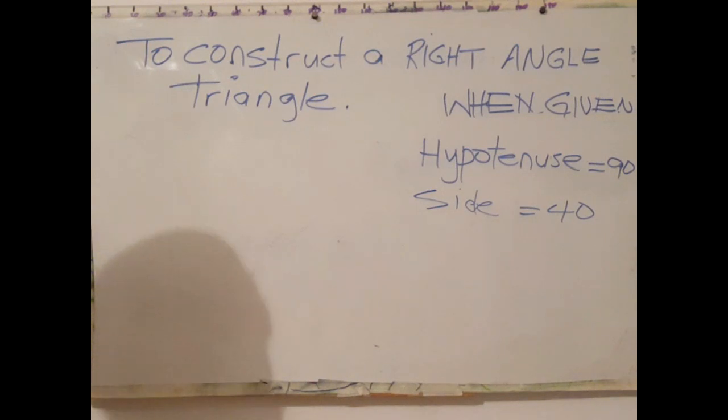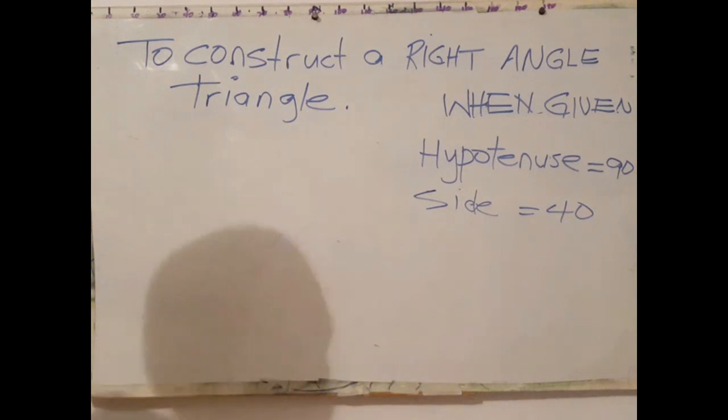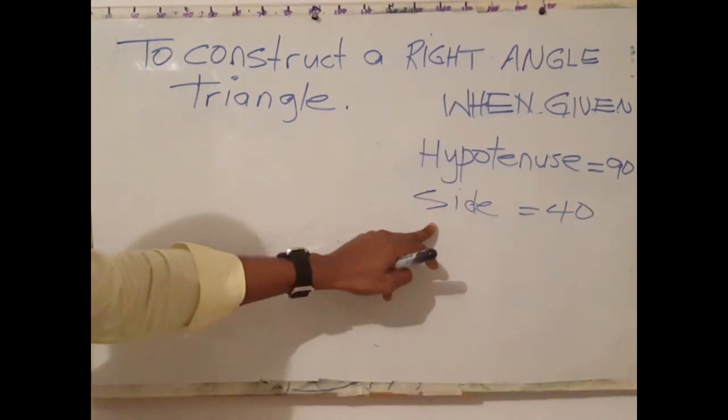At the end of this video you should be able to construct a right angle triangle when given the hypotenuse and one side.